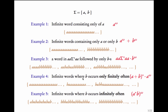Infinite words where b occurs only finitely often: you can see any finite word and after that you should see only a's. These are some examples of words in this language: (a + b)* · a^ω.